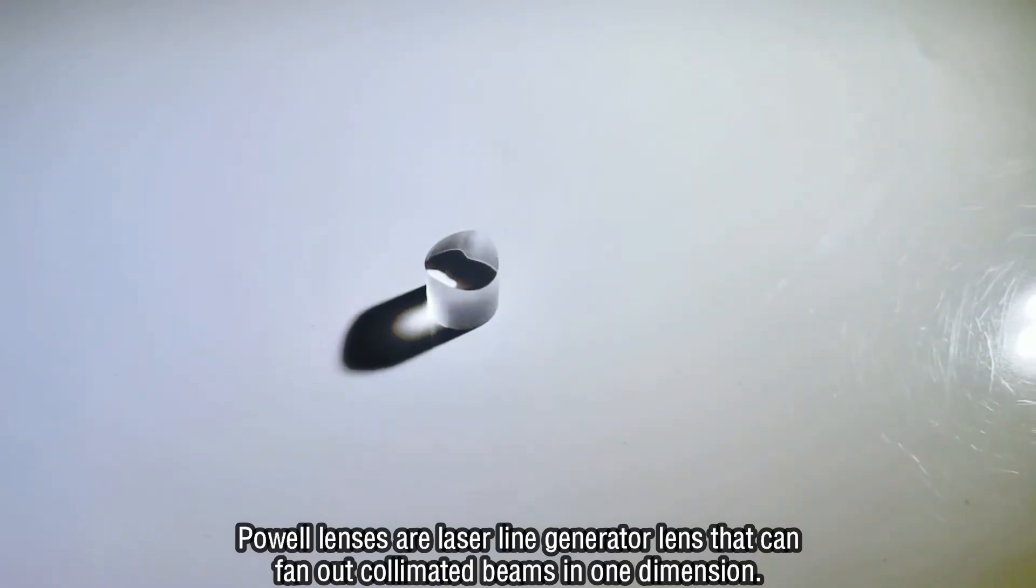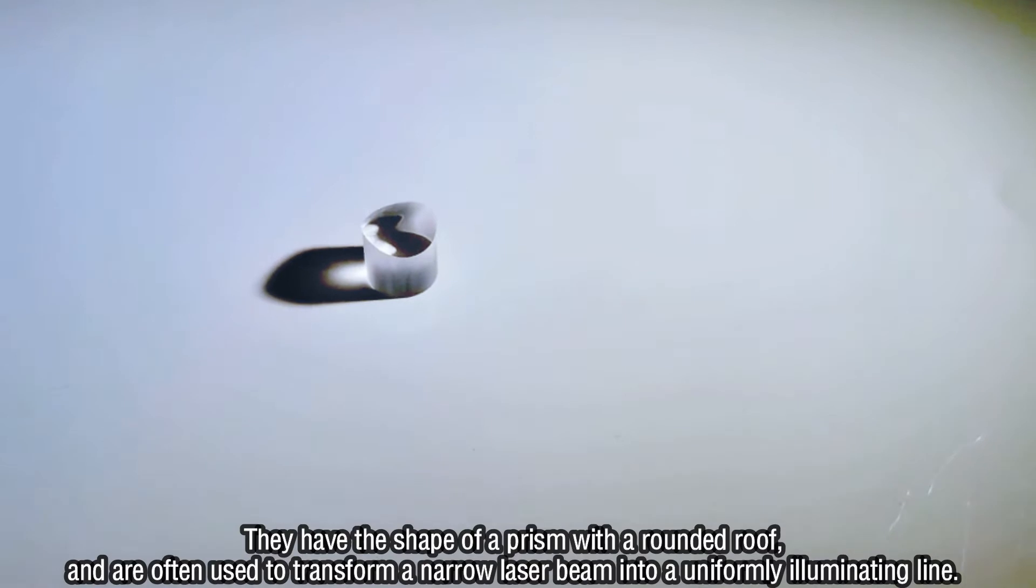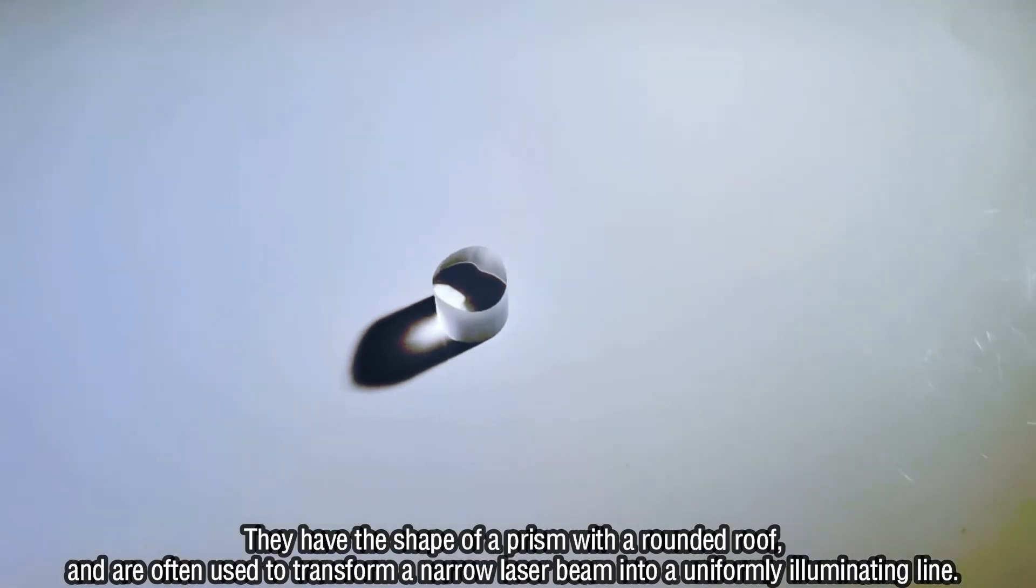Powell lenses are laser line generator lenses that can fan out collimated beams in one dimension. They have the shape of a prism with a rounded roof and are often used to transform a narrow laser beam into a uniformly illuminating line.